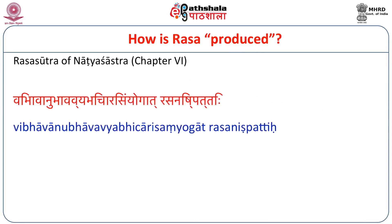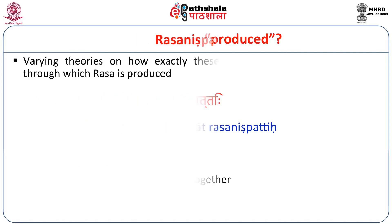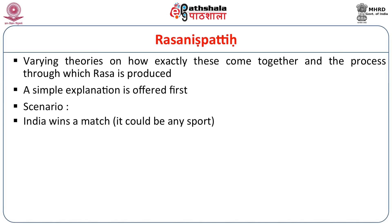Vibhava, Anubhava, Vibhichari, Samyogat, Rasa Nishpatti. Nishpatti means production or coming out. Rasa is produced when Vibhava, Anubhava and Vibhichari Bhava come together. Let us see what these three Bhavas are. There are varying theories on how exactly these come together and the process through which Rasa is produced. We'll offer a very simple explanation first, then go to the more complicated one.